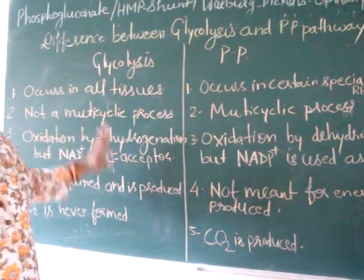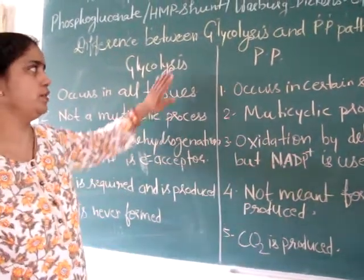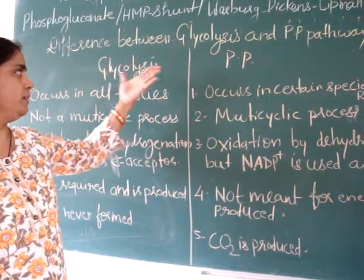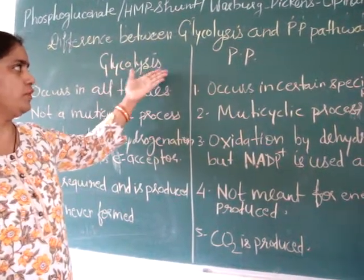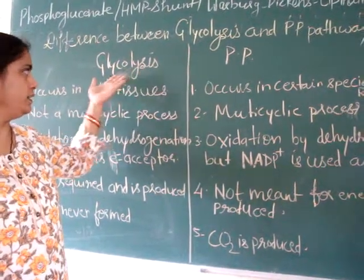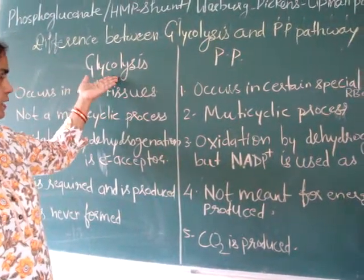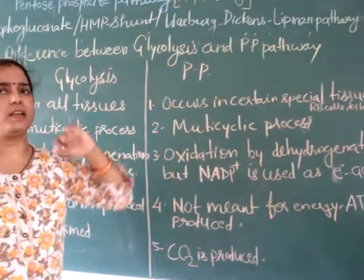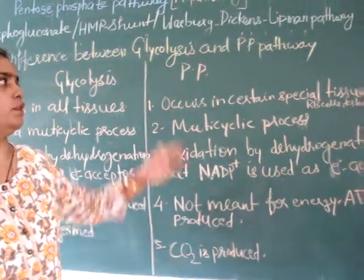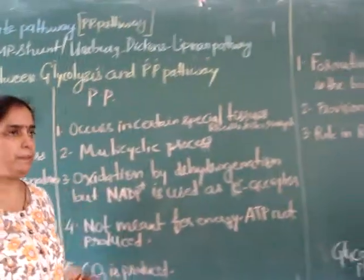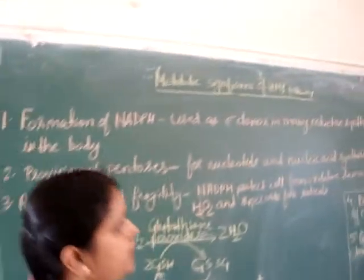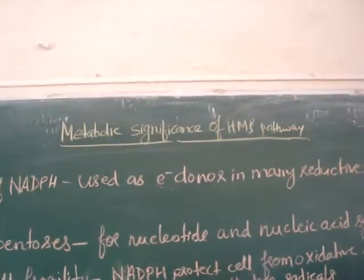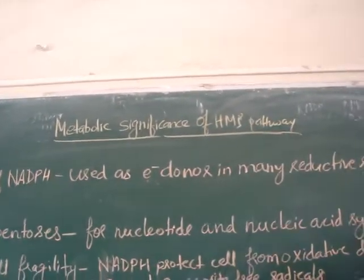These are some difference points between glycolysis and the PP pathway. For both pathways, glucose 6-phosphate is an intermediate — it is the second intermediate of glycolysis and the starting material for the PP pathway. Now we will see the metabolic significance of the HMP pathway.